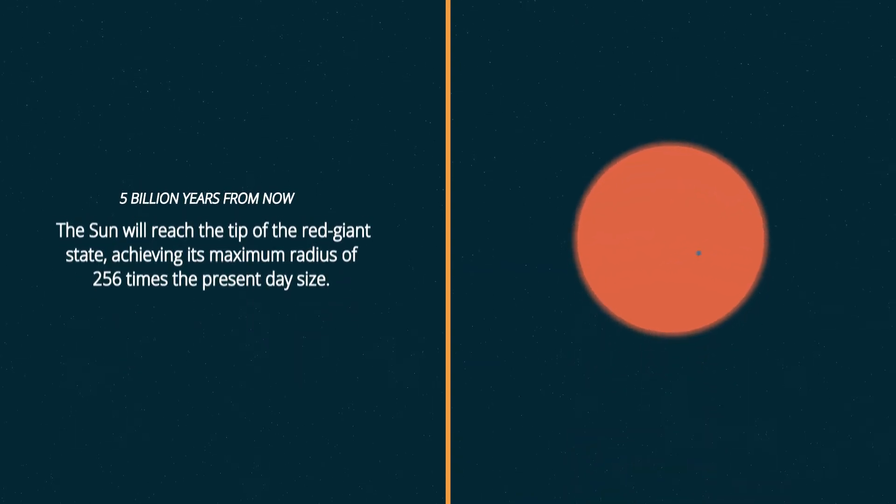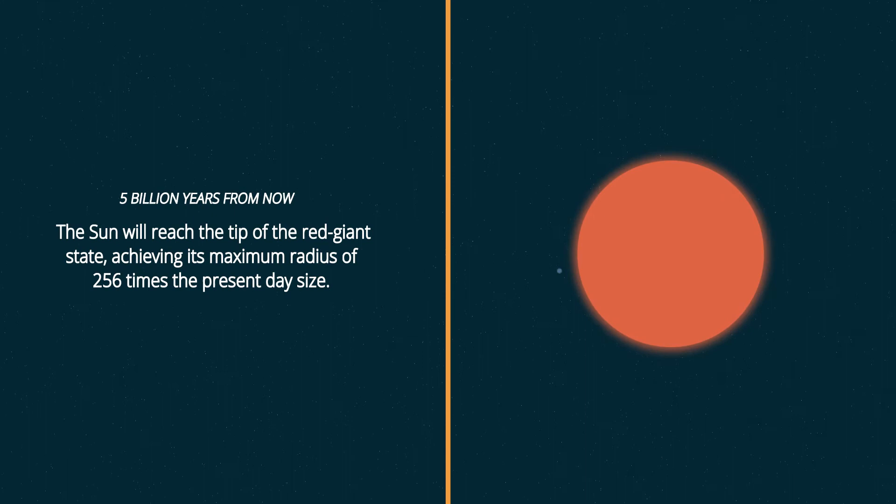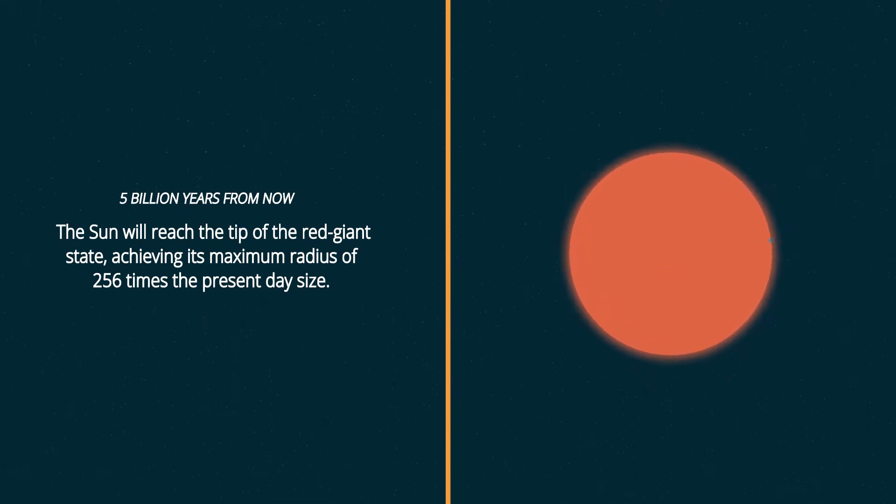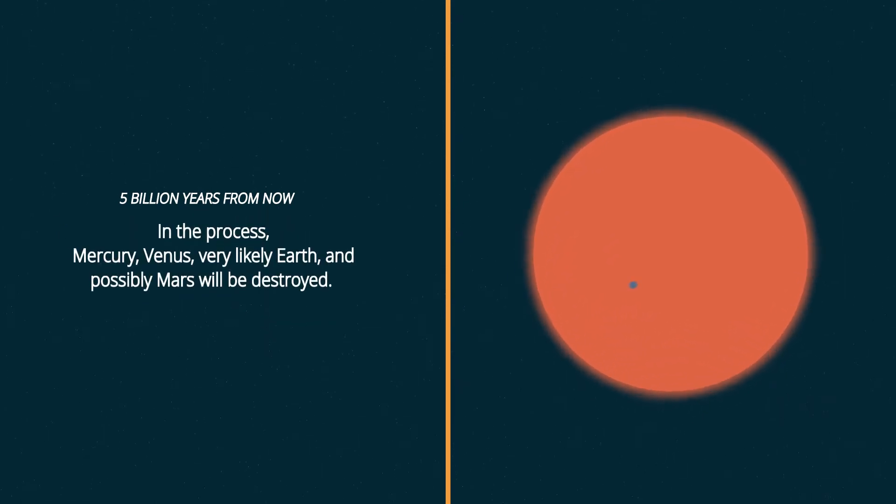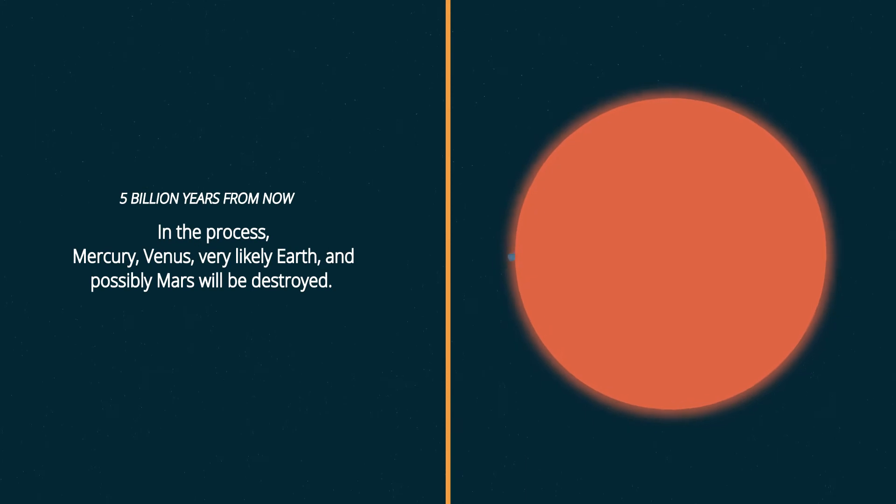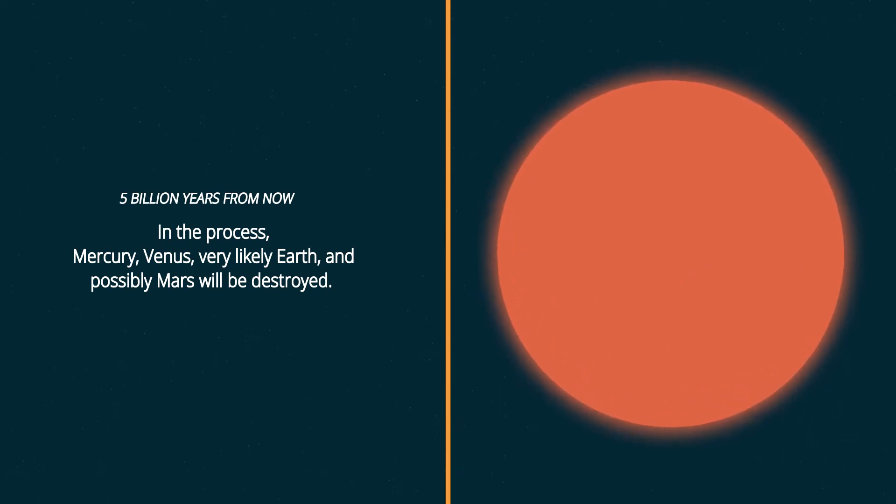Five billion years from now, the Sun will reach the tip of the red giant state, achieving its maximum radius of 256 times present-day size. In the process, Mercury, Venus, very likely Earth, and possibly Mars will be destroyed.